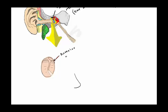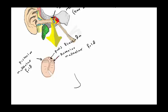The tympanic membrane has several structures. There is the anterior mallular fold. The malleus is the bone from the ossicles which attaches to the tympanic membrane. There is also the posterior mallular fold. The part of the tympanic membrane called pars flaccida is the loose part, and it is easily affected by benign diseases like otitis media.